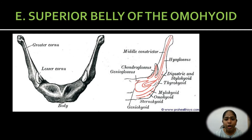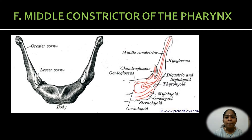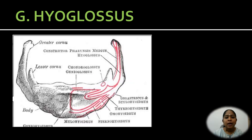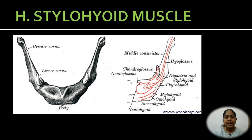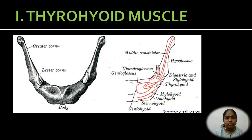The superior belly of the omohyoid is attached to the lateral part of the inferior border of the body. The middle constrictor of the pharynx arises from the upper surface of the greater cornua and from the posterolateral aspect of the lesser cornua. The hyoglossus arises from the upper surface of the greater cornua, lateral to the origin of the middle constrictor. The stylohyoid muscle is inserted into the upper surface of the greater cornua near its junction with the body. The thyrohyoid muscle is inserted into the anterior part of the lateral border of the greater cornua.